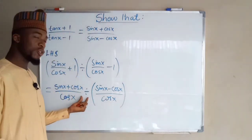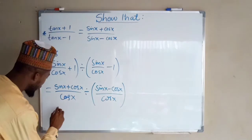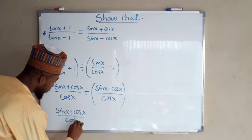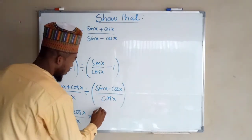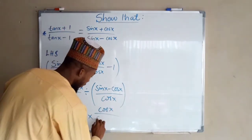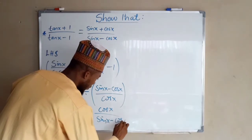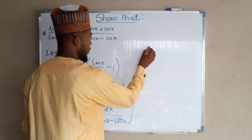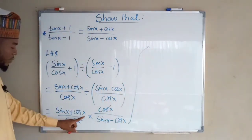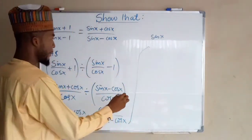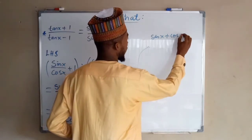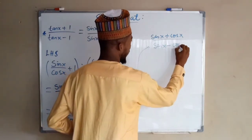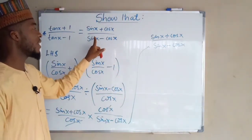To change the division sign into multiplication we take the reciprocal. So we have sin x plus cos x divided by cos x, times cos x divided by sin x minus cos x. The cos x terms cancel, leaving us with sin x plus cos x over sin x minus cos x, which is just the same as the right-hand side. Hence proved.